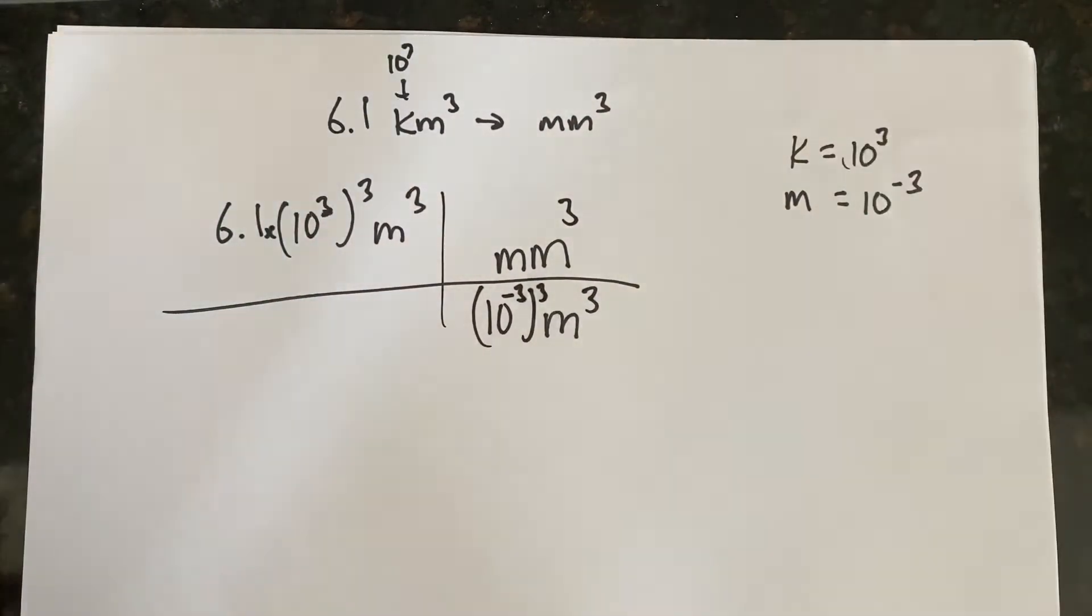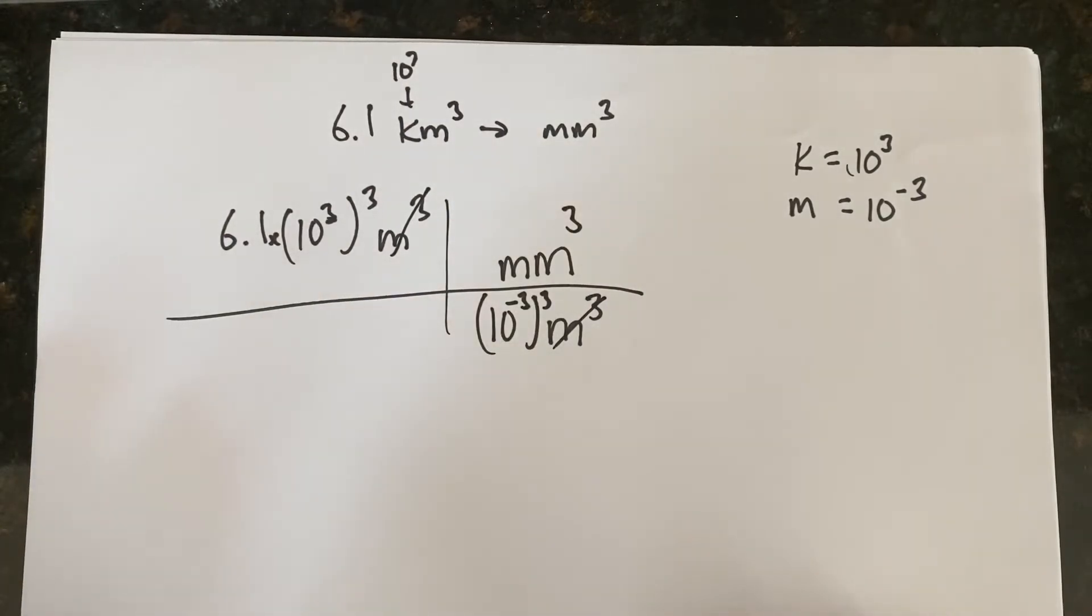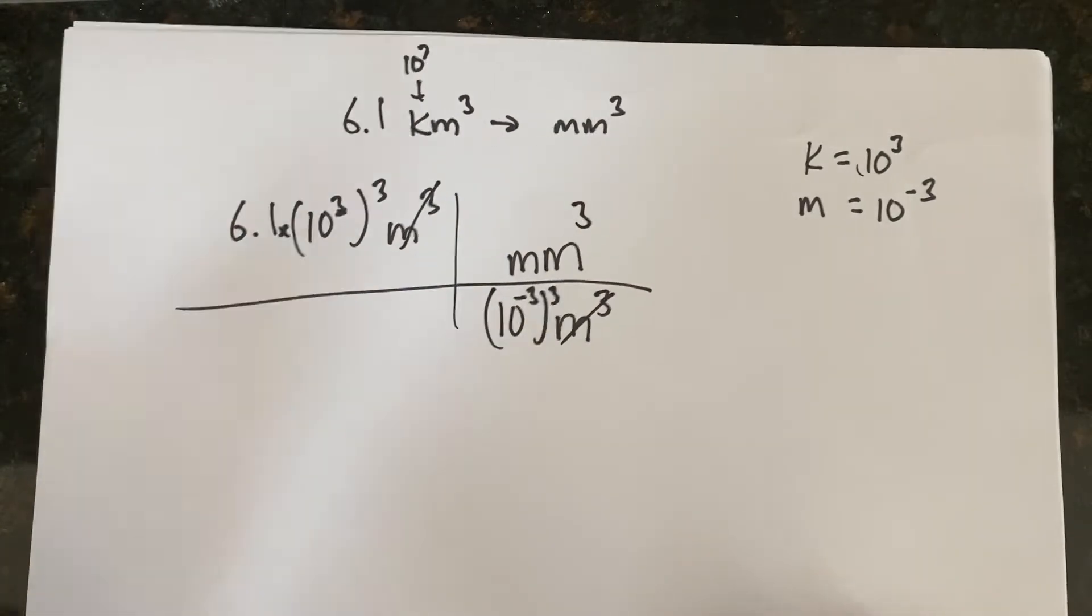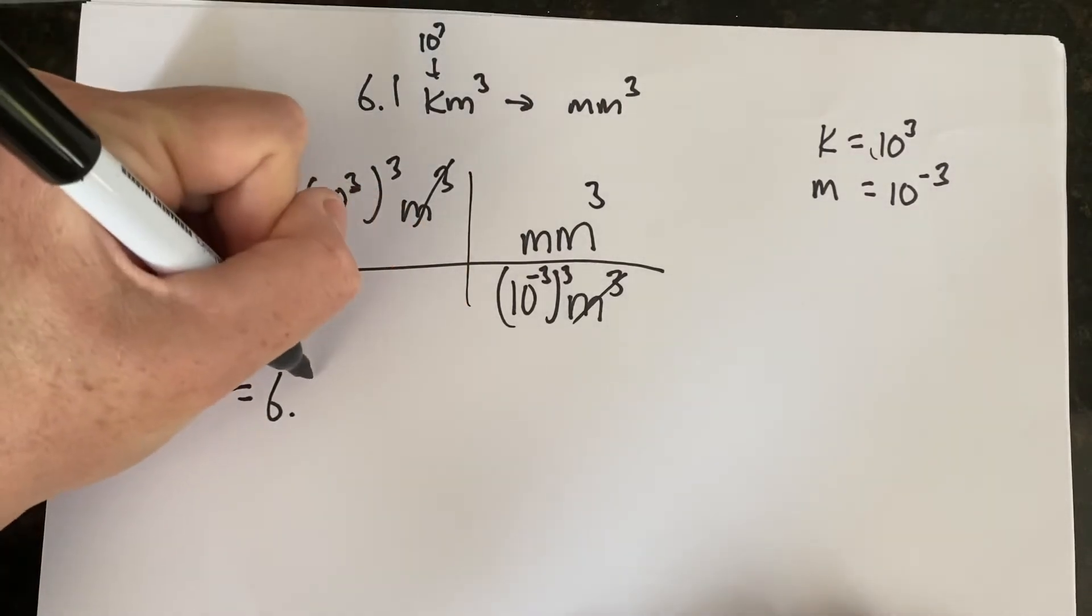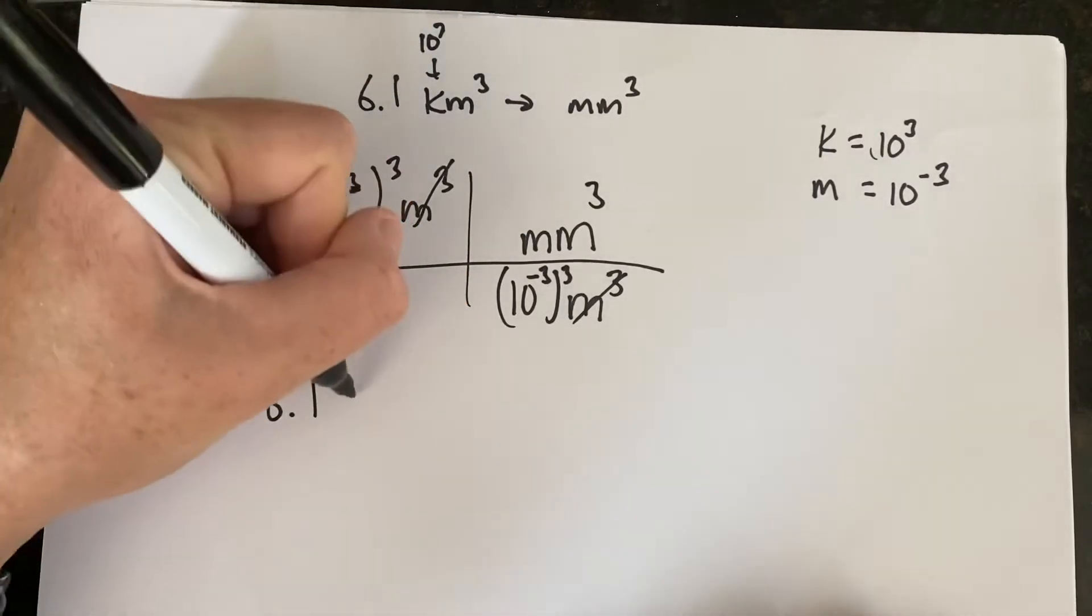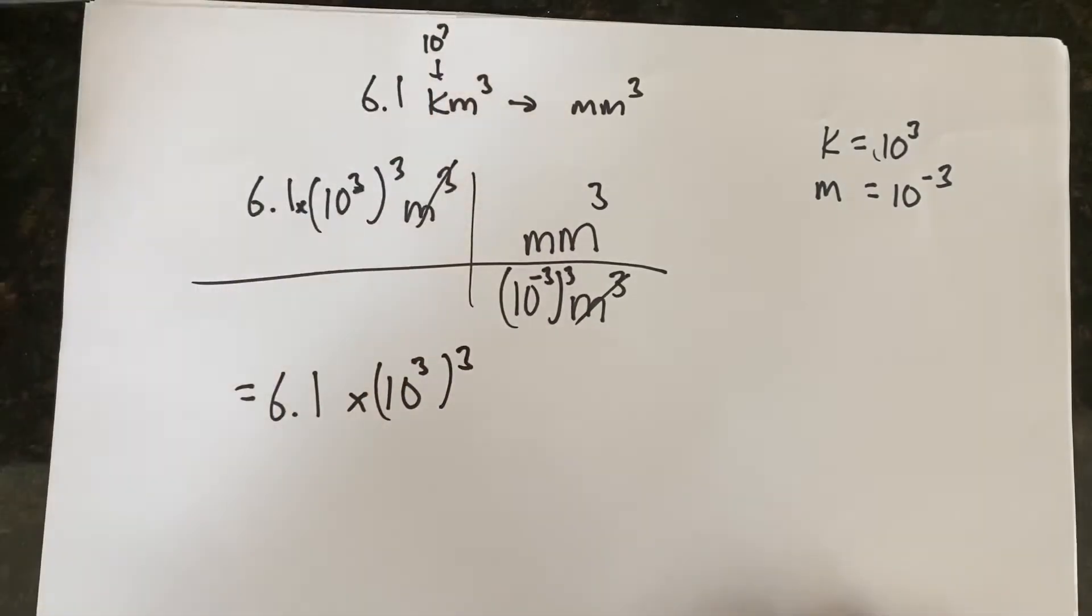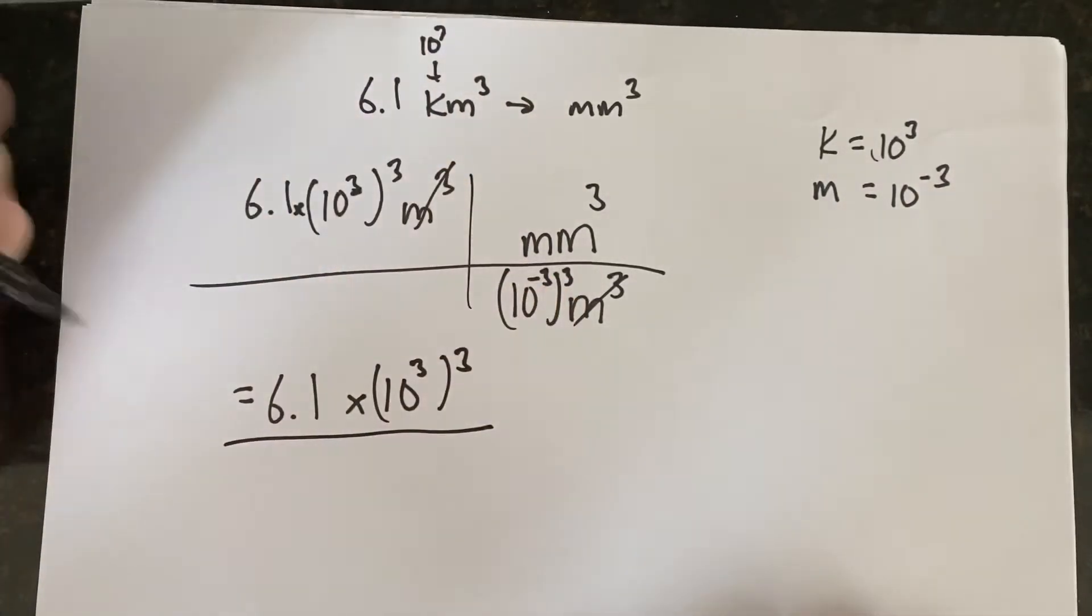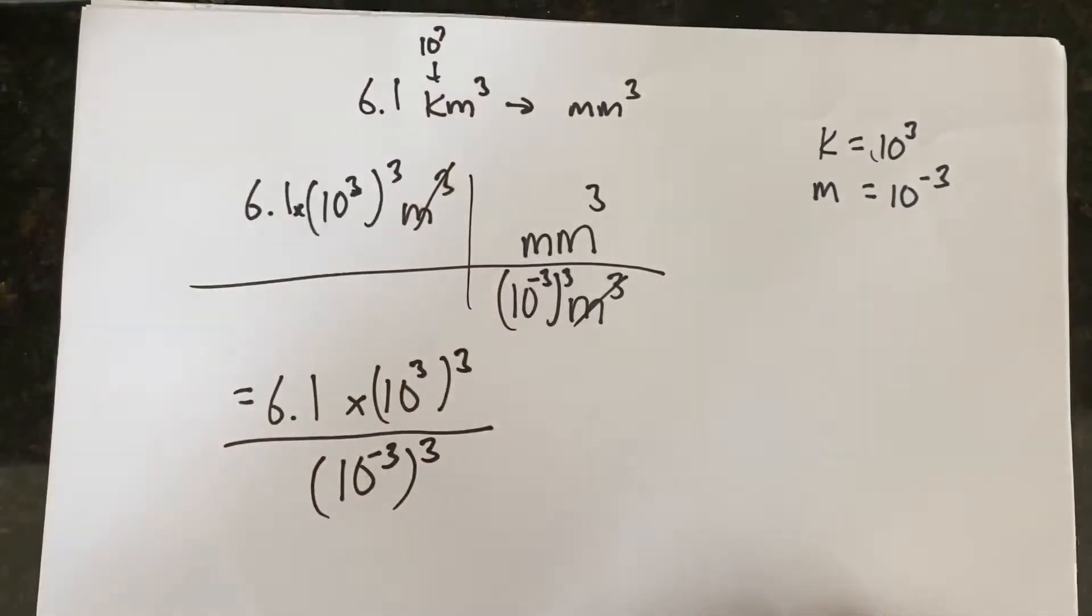Alright, so now we've got our problem all set up, because we know that meters cubed are going to cancel, and we'll be left with the units of millimeters cubed, and that's where we want to be. So let's go ahead and put that down here. I'm going to rewrite it so it's all nice and clean. We have 6.1 times 10 to the third cubed, all divided by 10 to the negative third cubed.